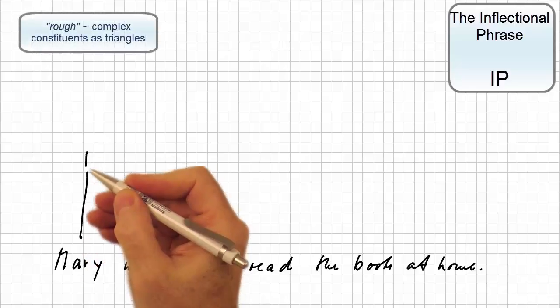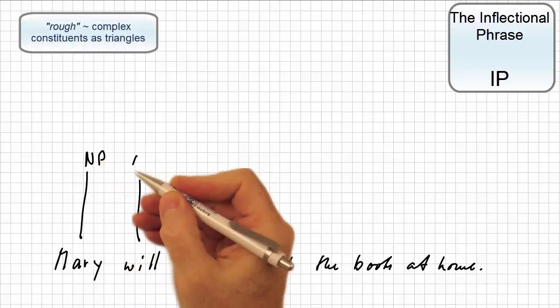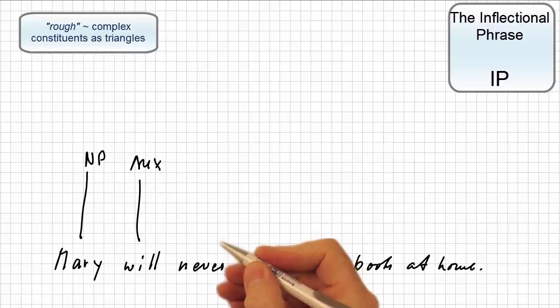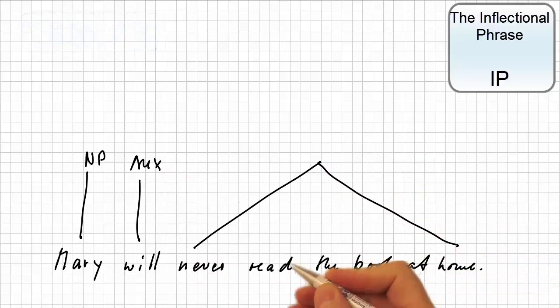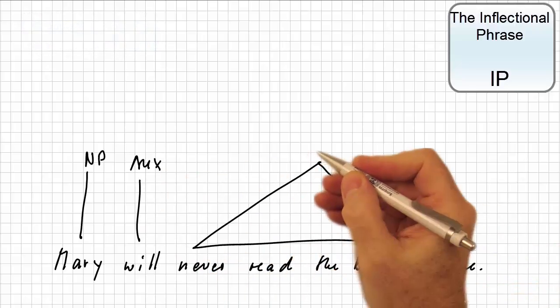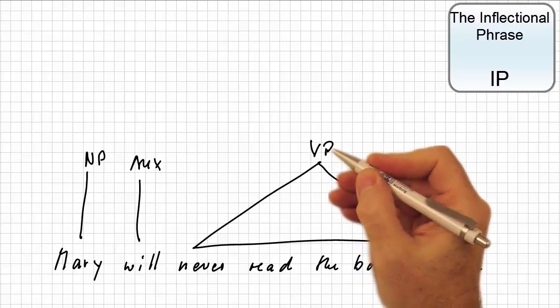Let's perform a rough constituent analysis first. Mary is a noun phrase, will is an auxiliary verb, and never read the books at home is a verb phrase.